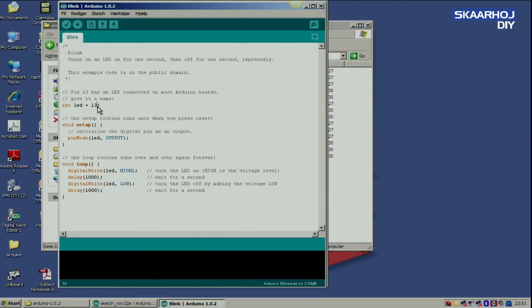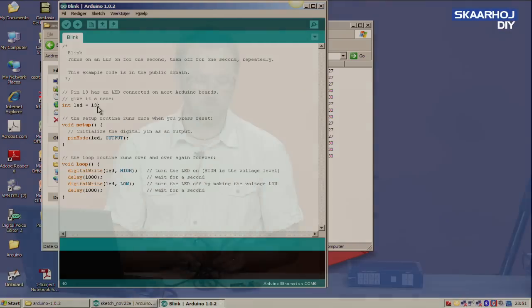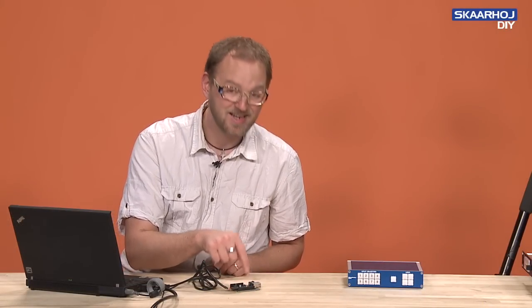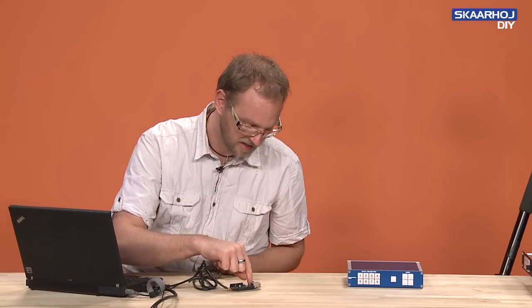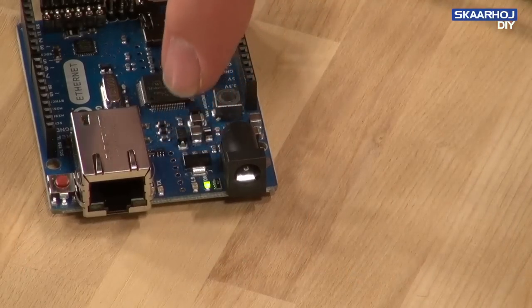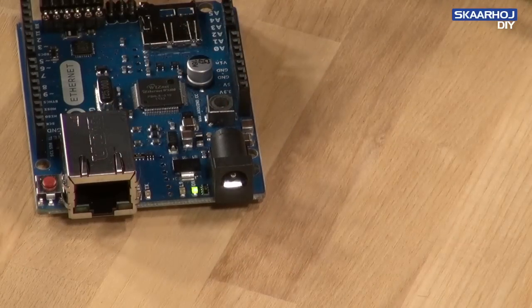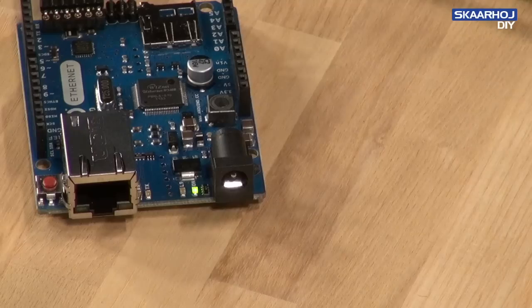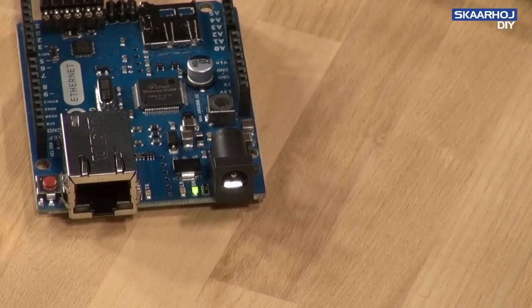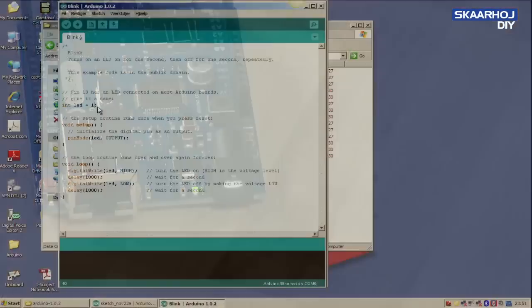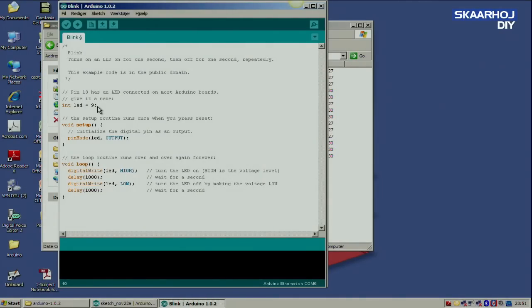But the thing is that we are on an Arduino Ethernet. And on these boards, we use the digital pin 9 to blink this little LED, which you can see right here. There's a small LED which will begin to blink as soon as we upload the sketch. But it has digital pin 9. So in the application, we go to digital pin 9. And then we press the upload button.